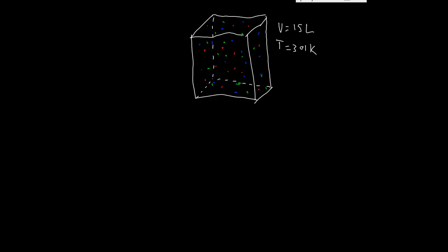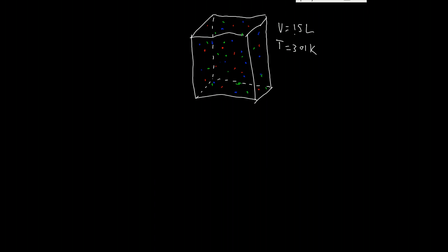Alright, so in this problem we're given that we have a 15 liter volume and a temperature of 301 Kelvin. And in this volume we have different masses of gases. We have some chlorine molecules that are in green, the nitrogen molecules are blue, the oxygen molecules are red, and those are the three types. These are three different molecules occupying a volume of 15 liters at 28 centigrade. So, what is the total pressure in here?